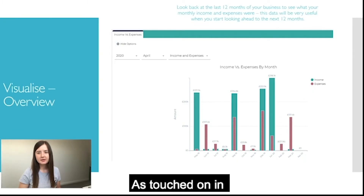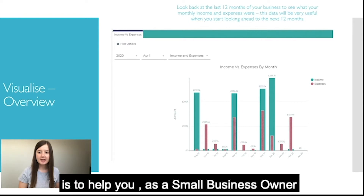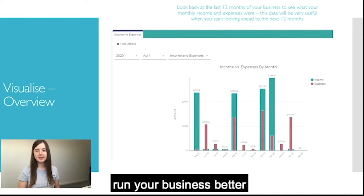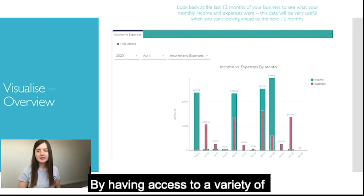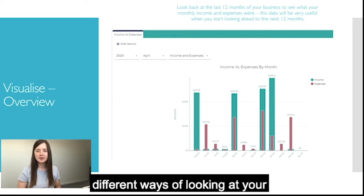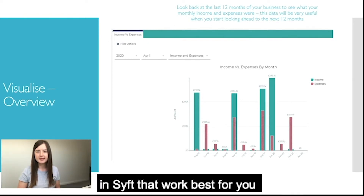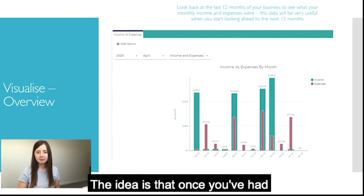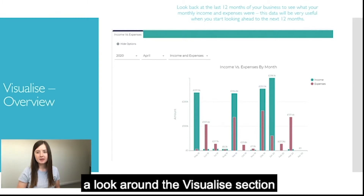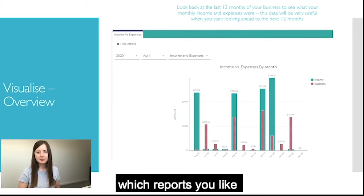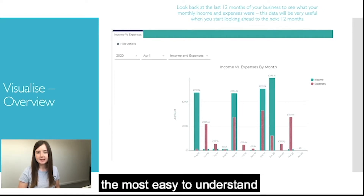Thanks Tom. As touched on in last week's webinar, the aim of the visualise section is to help you as a small business owner run your business better by having access to a variety of different ways of looking at your business performance and finding the reports in SIFT that work best for you. Once you've had a look around the visualise section you will quickly identify which reports you like and find the most easy to understand.